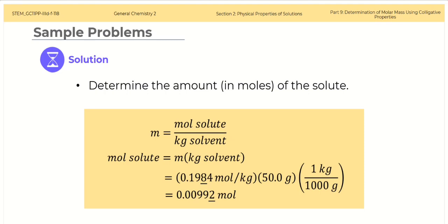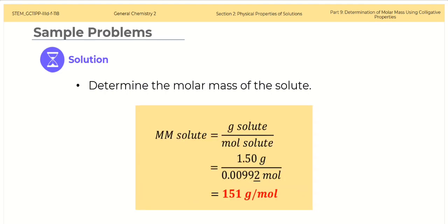The answer is 0.00992 moles. Take note that we use the unrounded value of molality and not 0.198 to minimize errors brought about by rounding off intermediate answers. At this point, we now have the mass and amount in moles of the unknown solute. Dividing the mass by the amount of moles gives us 151 grams per mole.